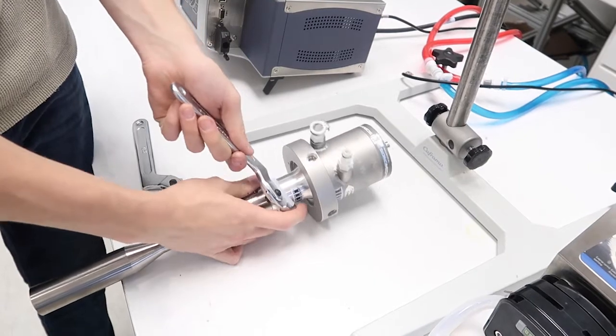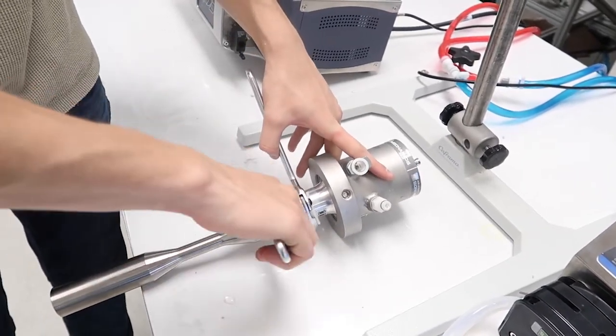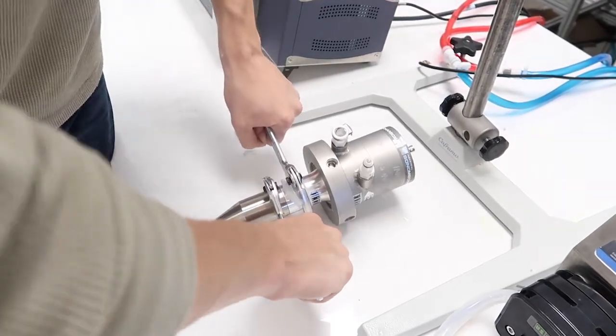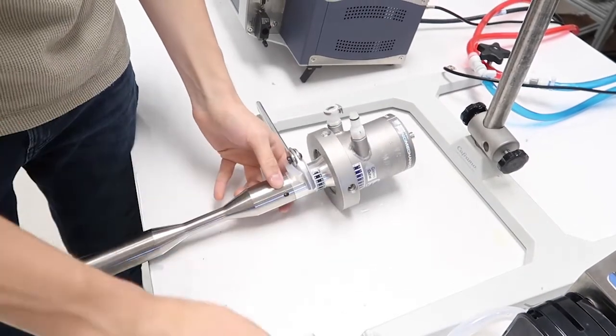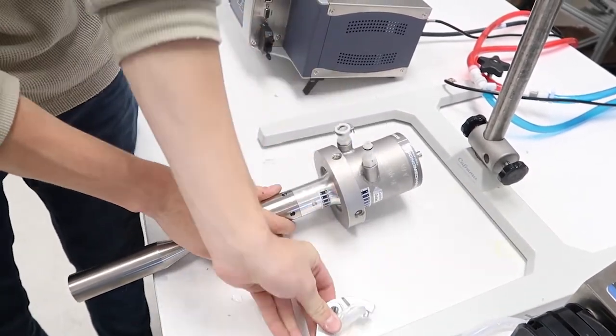Insert the pin of the first spanner wrench into a hole in the transducer's front mass and set it up to provide counterclockwise torque. Insert the pin of the second spanner wrench into a hole in the horn's input end and set it up to provide clockwise torque. Firmly press down with your palms on the wrenches using the weight of your body to generate counterclockwise and clockwise torques on the transducer and the horn respectively.